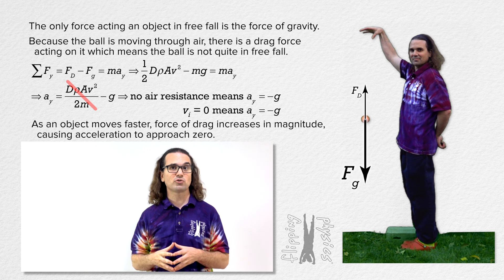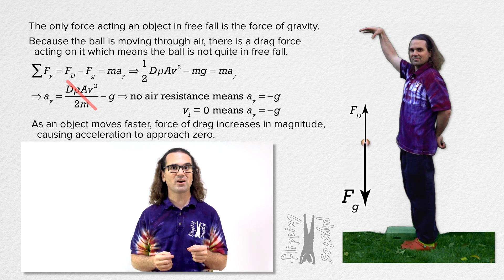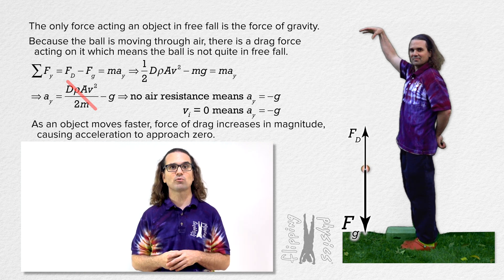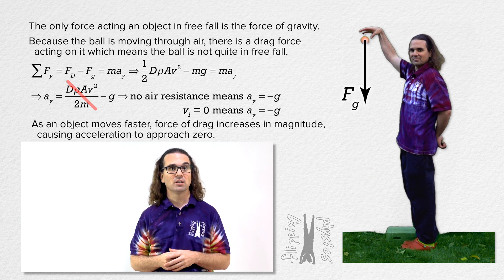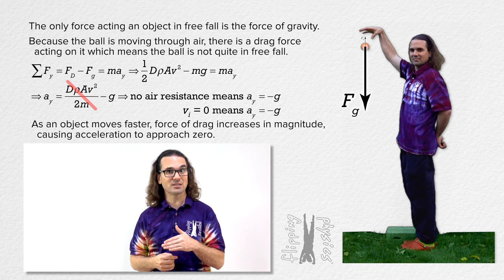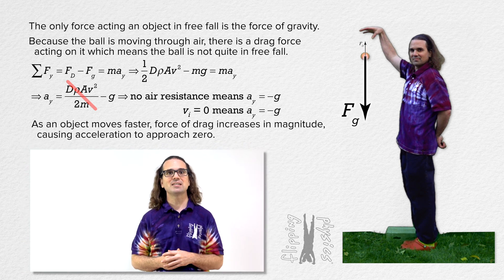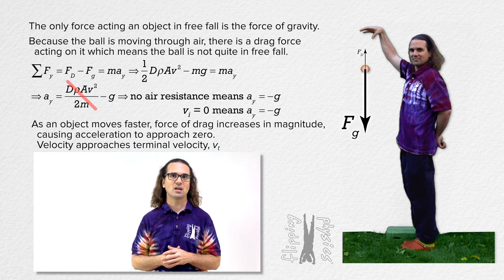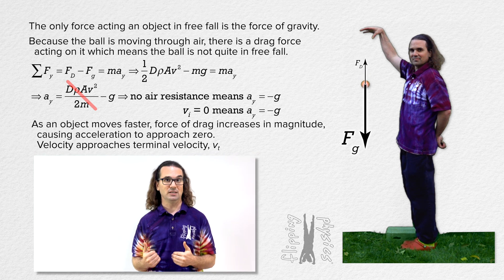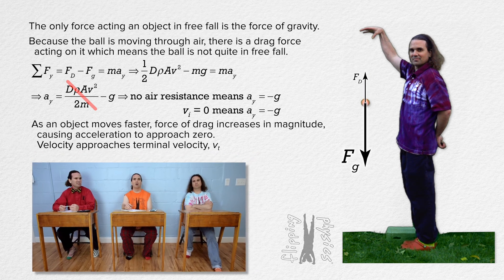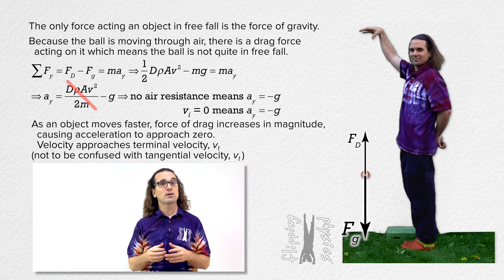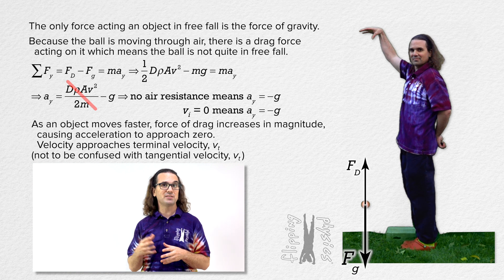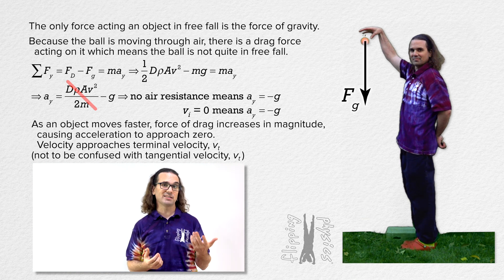When the force of drag has increased to the point where it is equal in magnitude to the force of gravity, the acceleration of the object equals zero, the velocity of the object is now constant, and this constant velocity is called the terminal velocity of the object, v sub t. Note that v sub t is the same symbol used for tangential velocity — unfortunately it is the same symbol, and hopefully there will never be a situation with both tangential and terminal velocities.